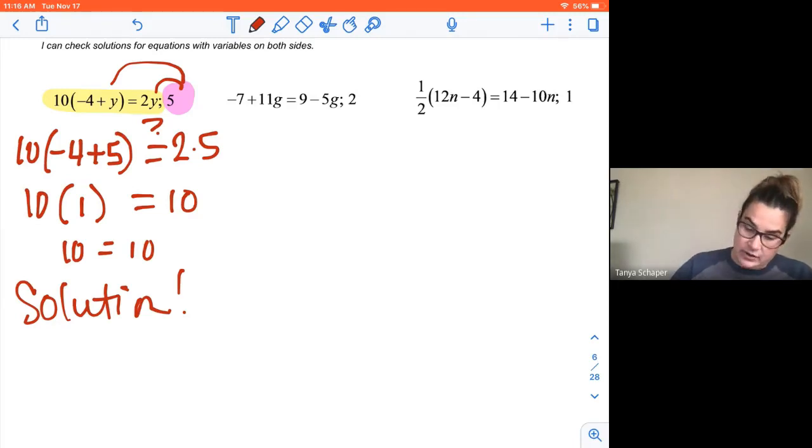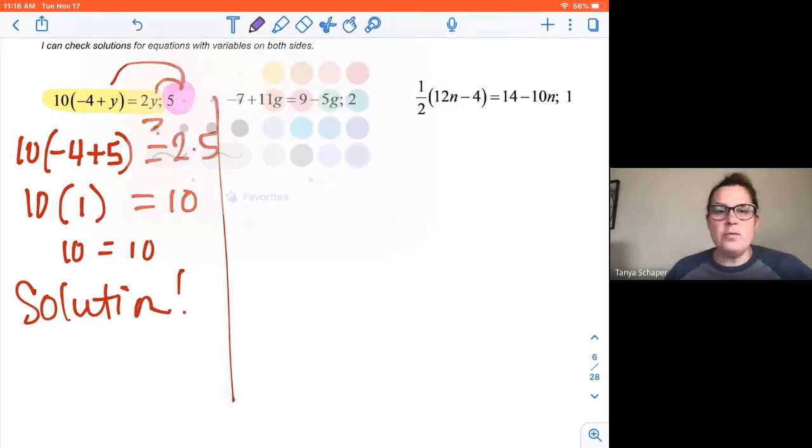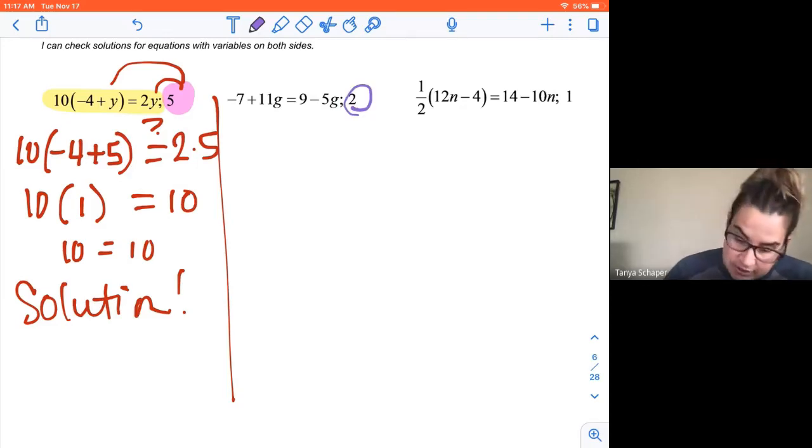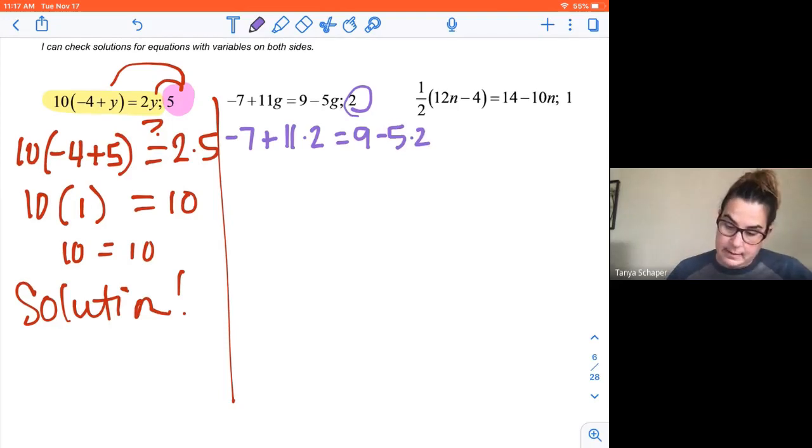The second one, let's take a look. I'm going to change up the color of my pen. That one's getting a little dull for me. All right. So what we're saying is we have the equation negative seven plus 11g equals nine minus 5g. We want to know, is two a solution? So is negative seven plus 11 times two the same as nine minus five times two? Because I'm going to substitute two in for both of the g's.